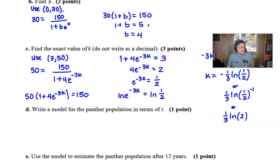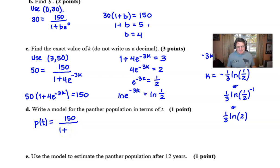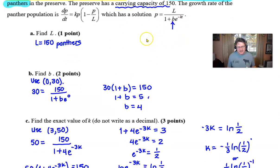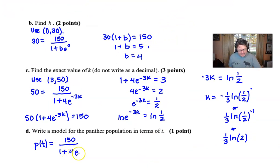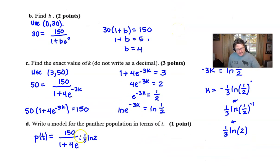For Part D, we write the complete model for the panther population. P of T equals L over 1 plus B times E to the negative K times T. Substituting our values: L is 150, B is 4, and using the natural log of 2 divided by 3 for the exponent — or equivalently, using 2 to the negative one-third power — we get our complete logistic growth equation for the panther population.